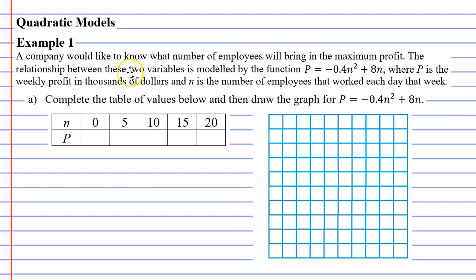Now the relationship between these two variables is modeled by the function P equals negative 0.4n squared plus 8n. Now P stands for the weekly profit in thousands of dollars and n stands for the number of employees that worked each day that week. Question a says complete the table of employees below and then draw the graph for this equation.